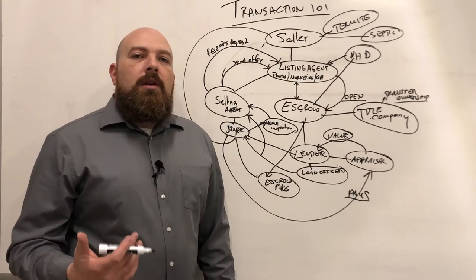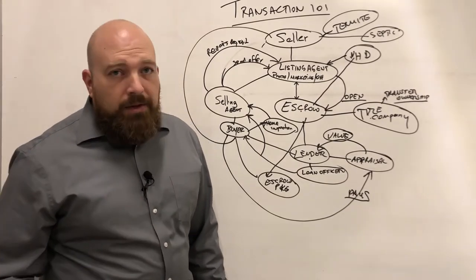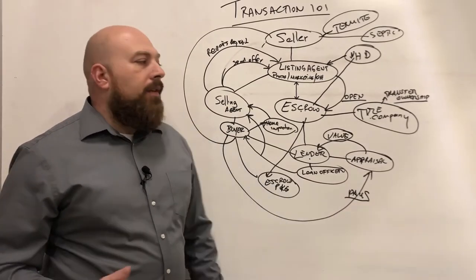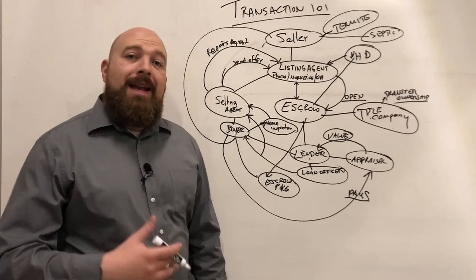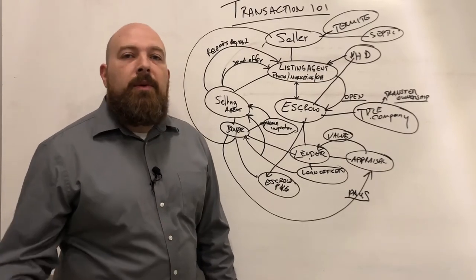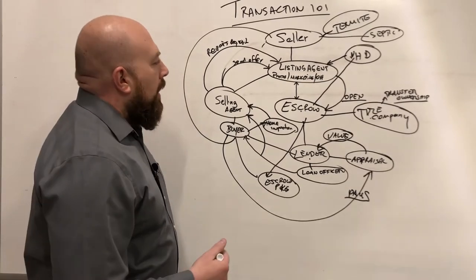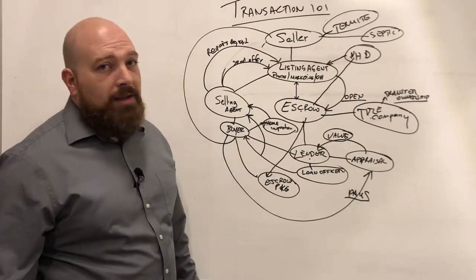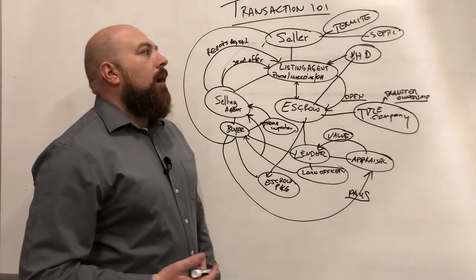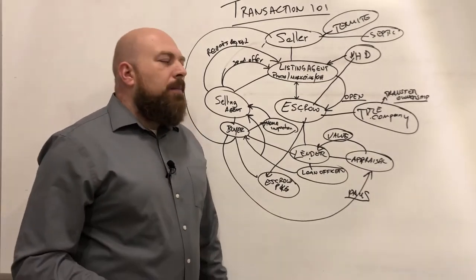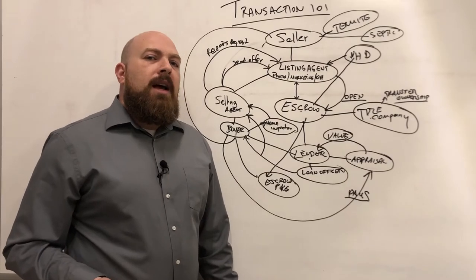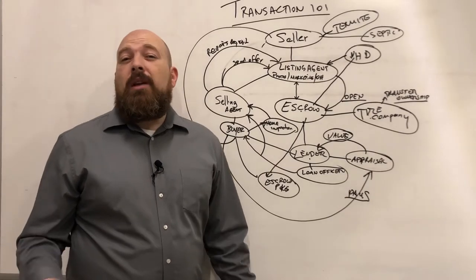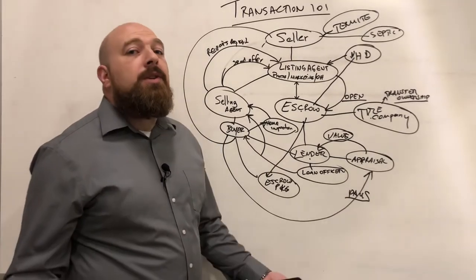As a buyer, remember: the seller does not have to complete repairs you request unless the appraisal calls out a safety issue, in which case it must be repaired for your loan to fund. Standard cosmetic repairs from a home inspection — the seller can choose to do or decline. Typically sellers are reasonable about it, but if they're selling as-is, perhaps for financial reasons, they may not be able to provide repairs.